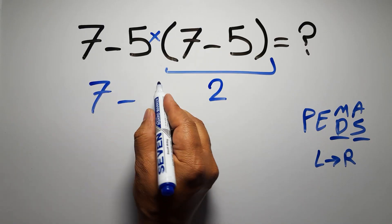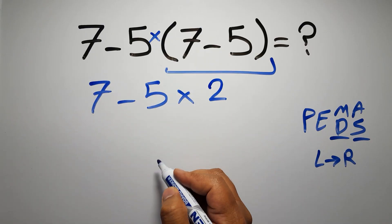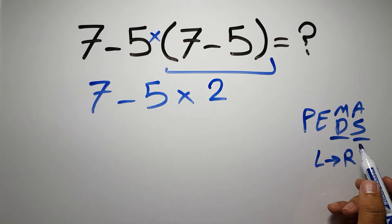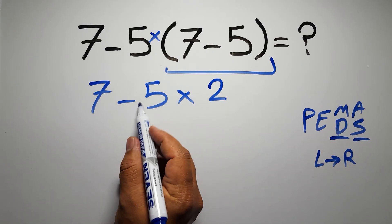so 7 minus 5 times 2, now we have one subtraction and one multiplication. According to the PEMDAS multiplication has higher priority than subtraction,